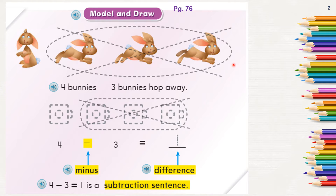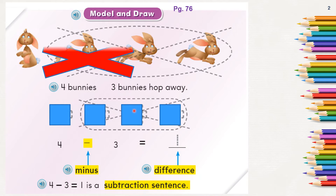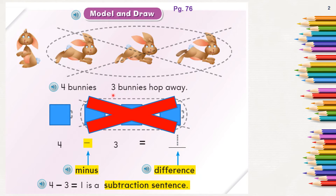Four bunnies — we see four bunnies in all. Three bunnies hop away, so three bunnies are crossed out. To represent this problem by drawing, we draw cubes. Each cube represents one bunny. We draw four cubes total, then cross out three, and count how many bunnies are left.